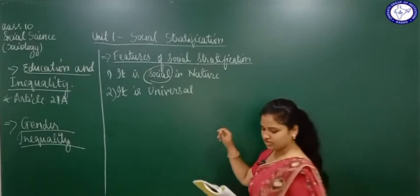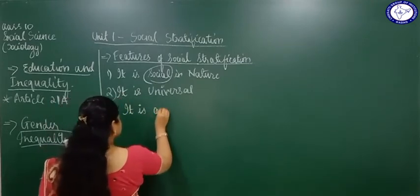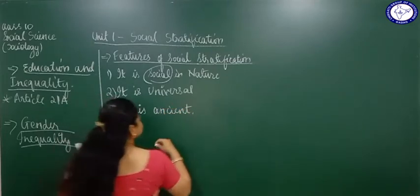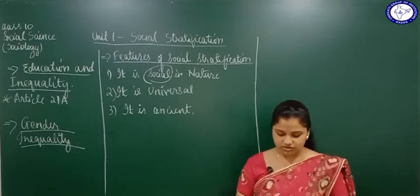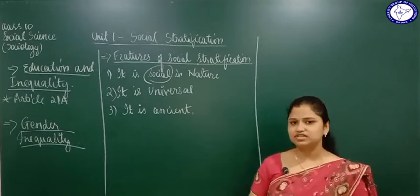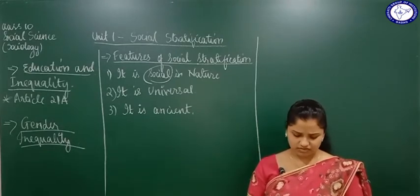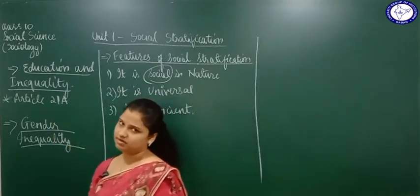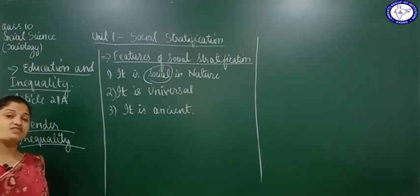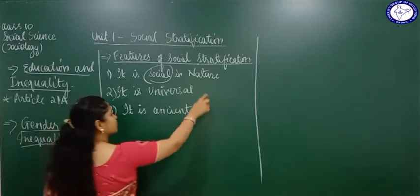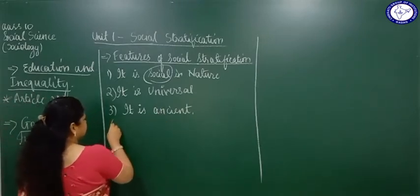The third feature: social stratification is ancient. It did not start in modern times — even in older times, such as in nomadic societies, people were divided into higher and lower classes and based on religion. Because stratification is universal — wherever there is human society it takes place — it has therefore been going on since ancient times.